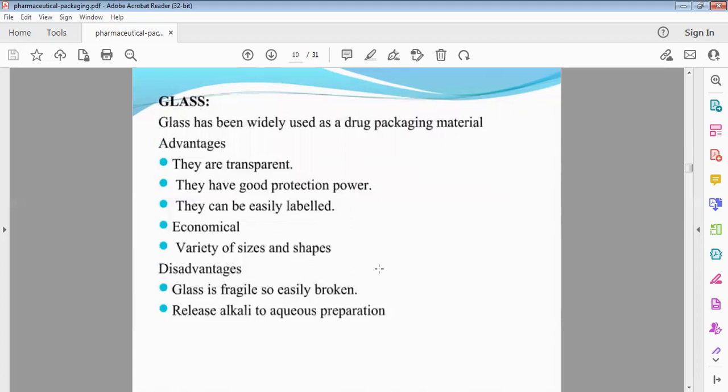Glass is used as a packaging material. The advantages are that it is transparent, has high protection power, easy labeling, economical, variety of sizes and shapes. Disadvantages are very fragile and easily broken. Alkaline substances release in aqueous preparations, syrups, elixirs.